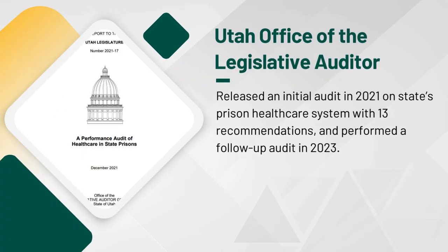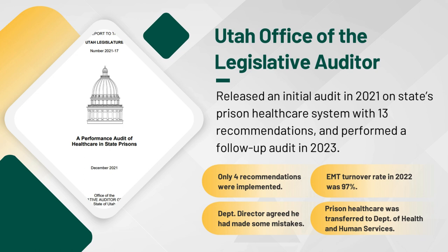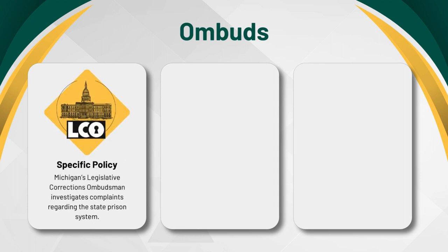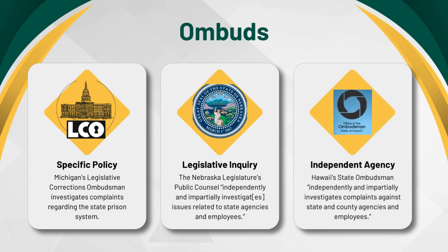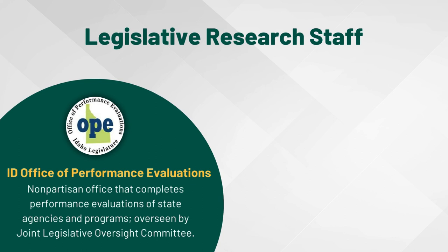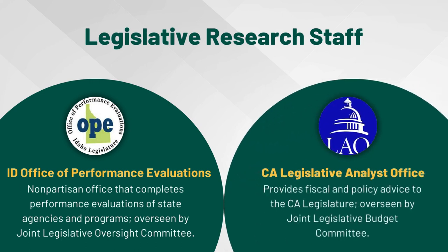Utah's legislative auditor released an initial audit in 2021 on their state's prison health care system. A follow-up audit in 2023 found only four of the 13 previous recommendations were implemented. Among the startling facts in the follow-up report was the emergency medical technician turnover rate of 97% in 2022. The director of the department agreed he made some mistakes. Resulting from this oversight, prison health care was transferred to the responsibility of the Department of Health and Human Services. Ombuds offices can be dedicated to a specific policy arena like Michigan's corrections ombudsman, can take inquiry from legislators like in Nebraska, and can be their own independent agency like in Hawaii.